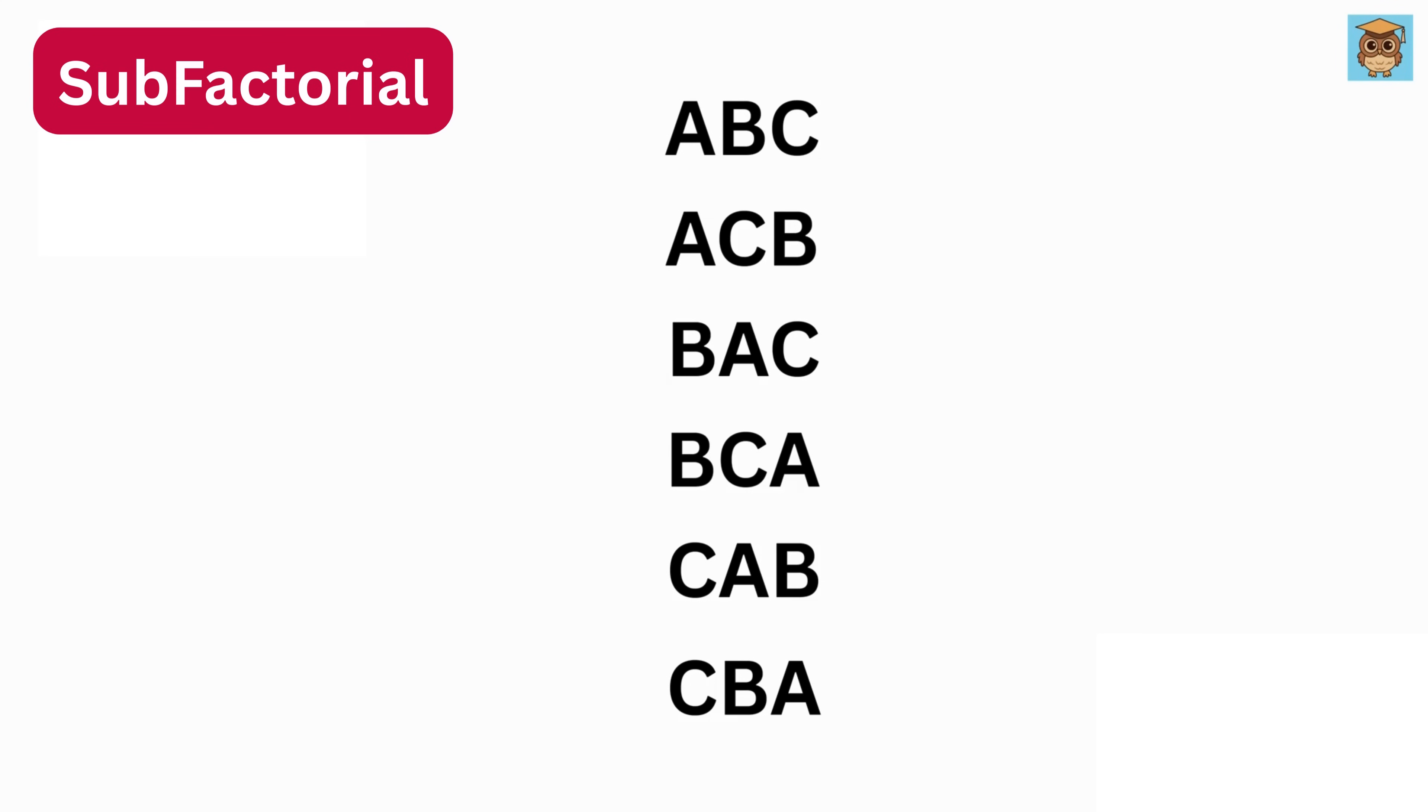Now in the case of a subfactorial, we count how many ways we can arrange A, B, and C so that none of them are in their original spots. For that, suppose the initial arrangement is A, B, and C.